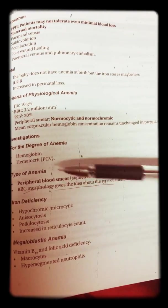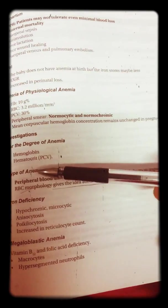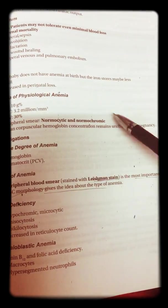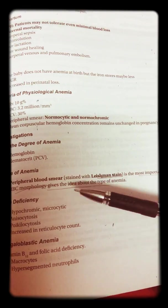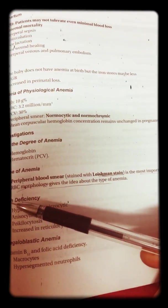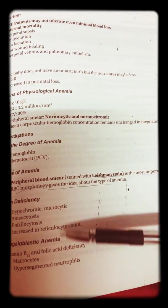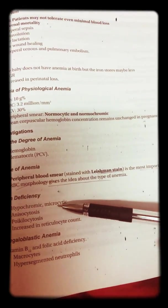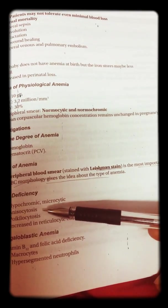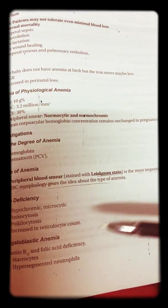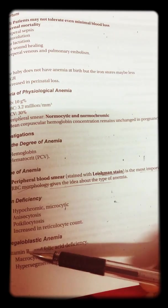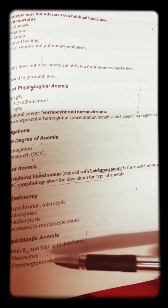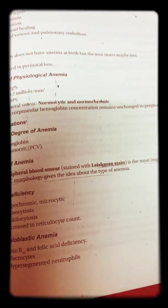Investigations include hemoglobin and packed cell volume. The type of anemia can be assessed by peripheral smear and RBC morphology. In iron deficiency anemia, we see hypochromic and microcytic cells, anisocytosis, poikilocytosis, and increase in reticulocyte count. In megaloblastic anemia, due to B12 and folic acid deficiency, there are macrocytes and hypersegmented neutrophils.